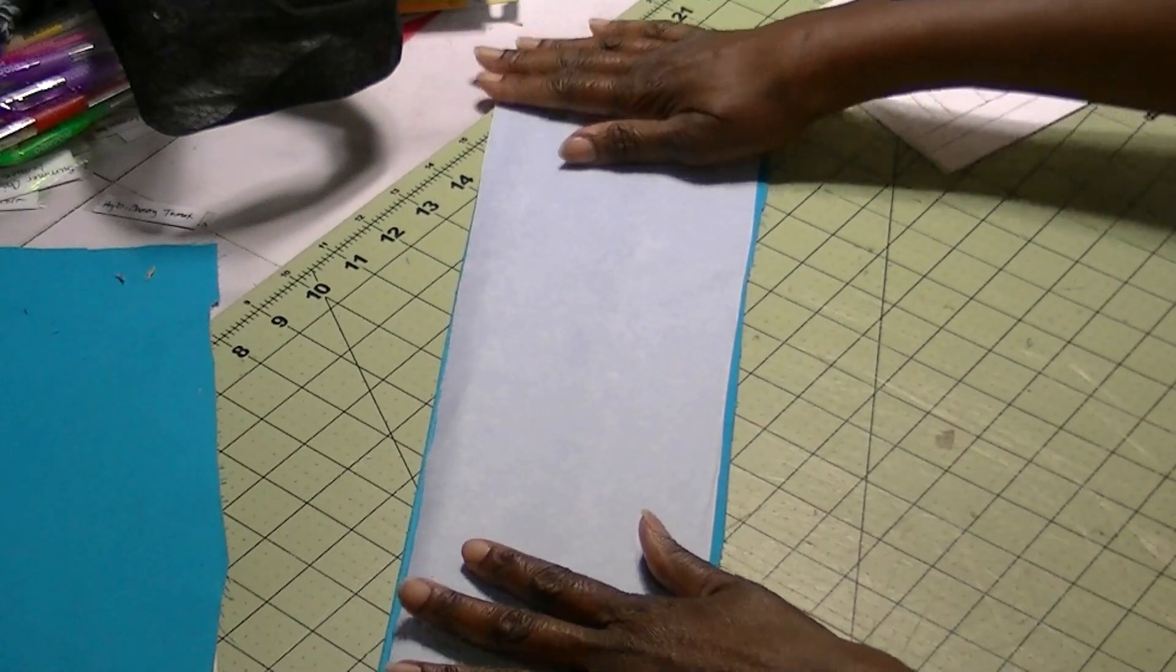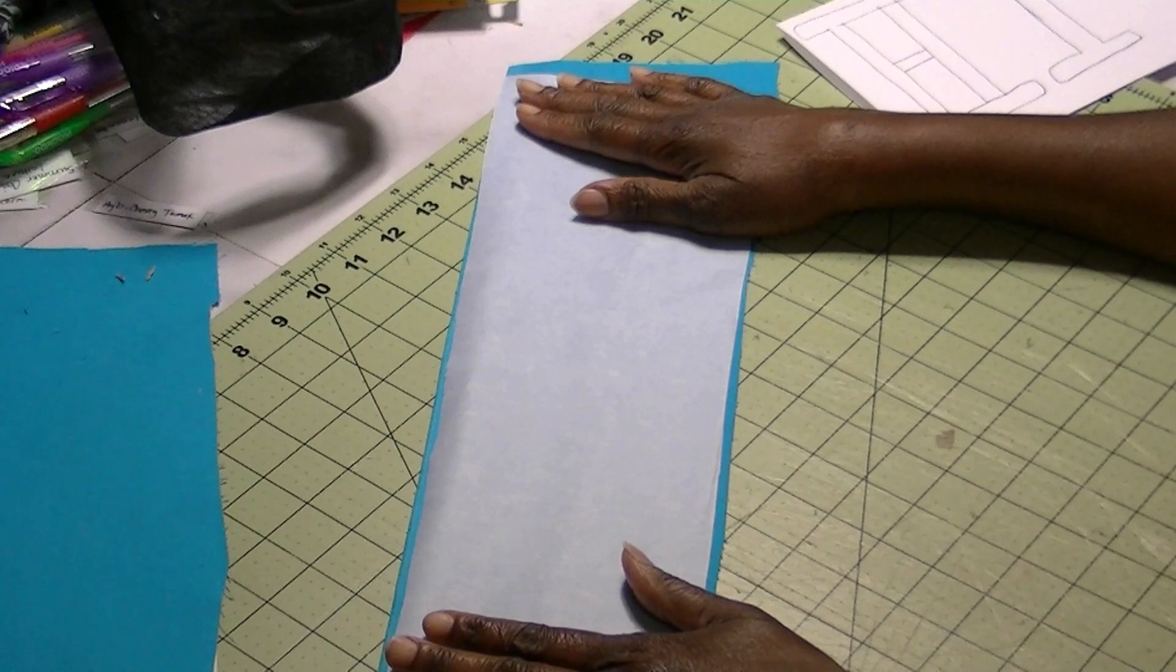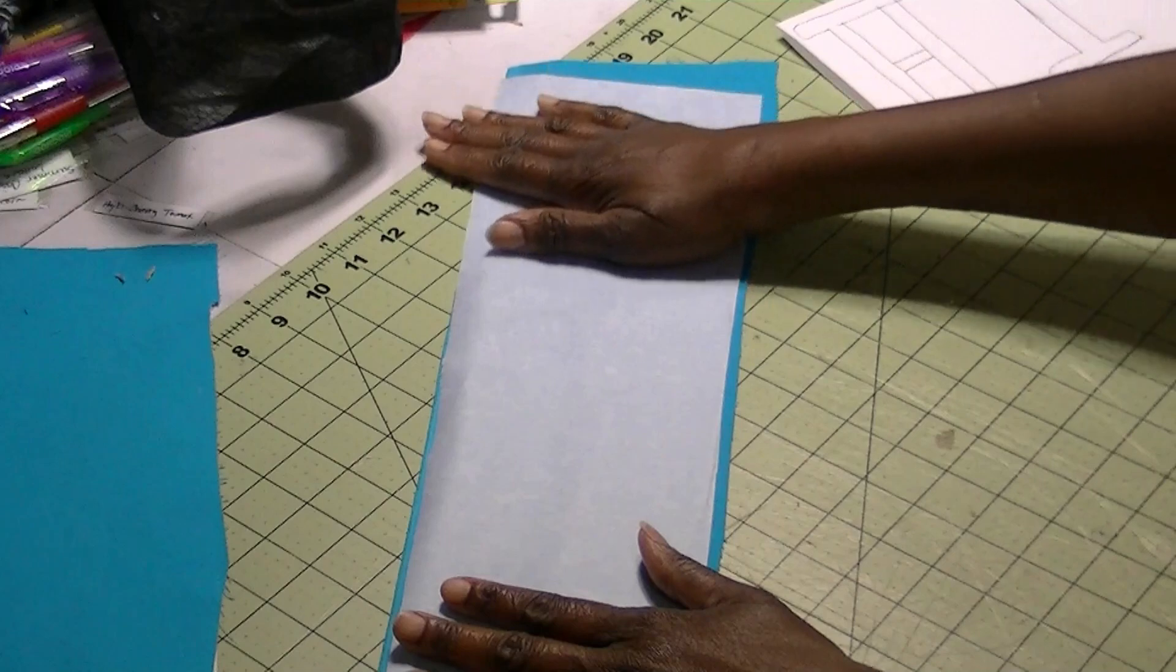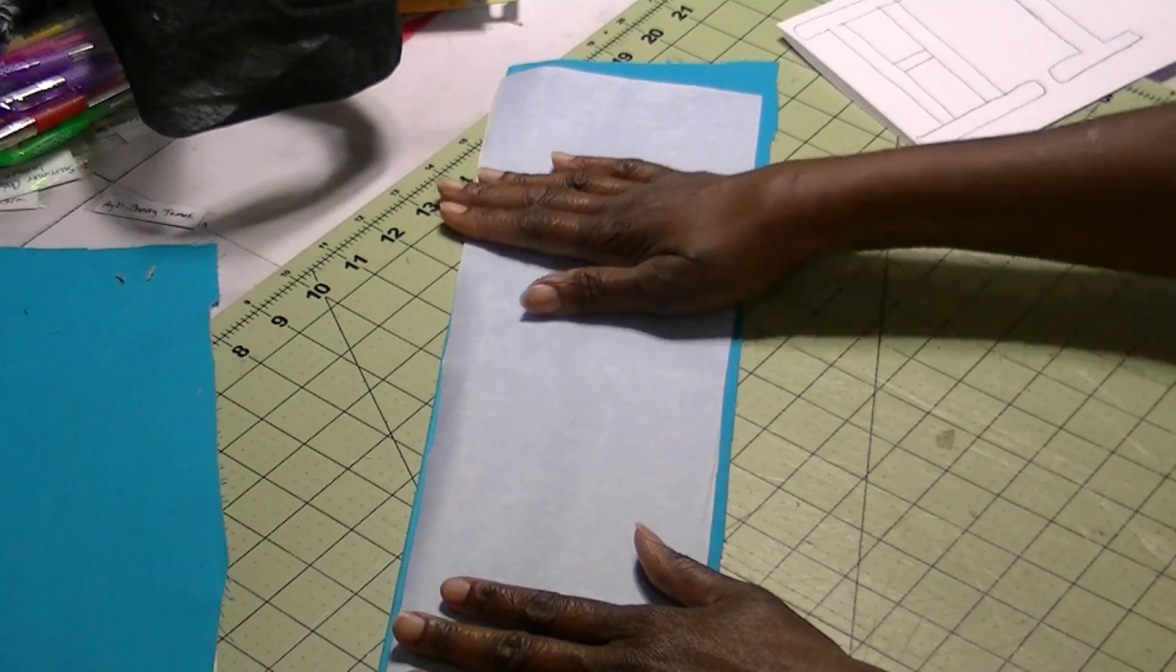you can see the fabric all the way around and that's what you want. So you're going to go ahead and iron this down according to the manufacturer's instructions. I like to do about 15 to 20 seconds, move the iron 15 to 20 seconds and so on until you get it all down.